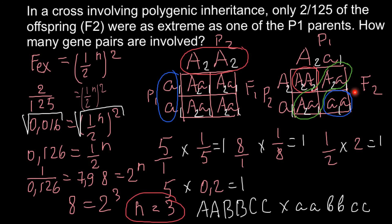In F2 generation there would be many more different genotypes, so the table would be much bigger. As you can see, using this formula is much easier than building a large Punnett square — much faster and more reliable, with less probability of making a mistake. I hope now you can solve analogous problems.